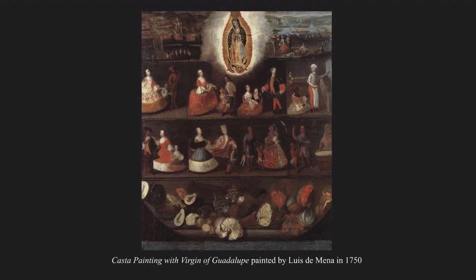Castas were referred to in different categories, such as Mestizo, which is Spanish and Indian parents; Mulatto, which is Spanish and Black parents; and Zambo, which is Black and Indian parents. In this particular painting, there are eight different families being depicted, each belonging to some of the Castas mentioned before.